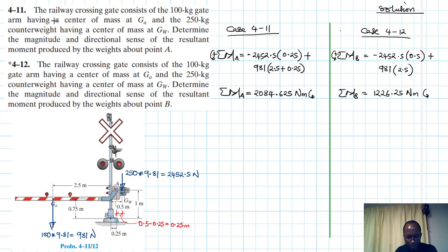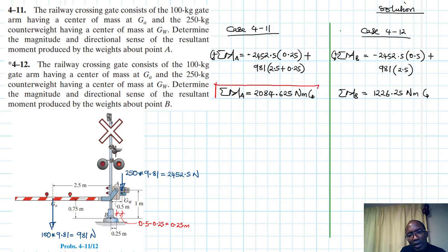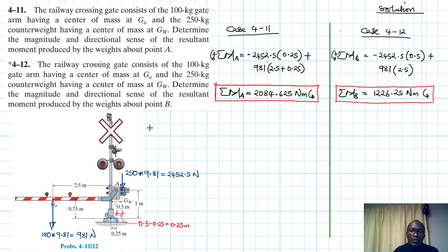Let me just verify: 2452.5 by 0.5 plus 981 by 2.5. So we have found the moment for case one and another set of moments for case number two. That's about it, and I hope this video is helpful. If it was, give a thumbs up, continue subscribing and liking my channel. Bye, and see you in my next screencast.